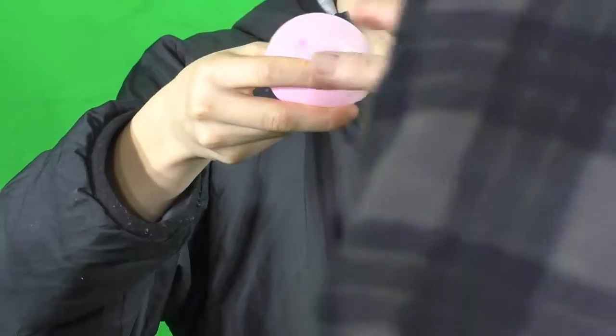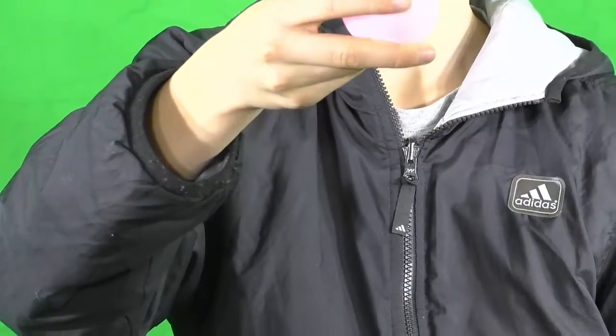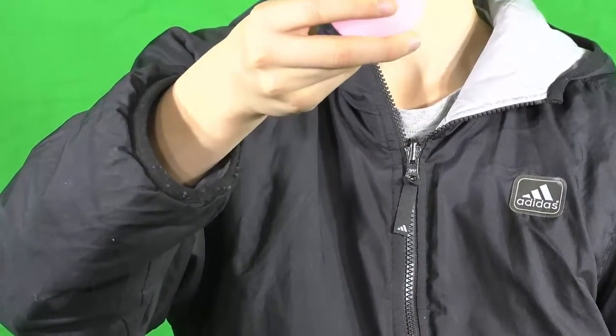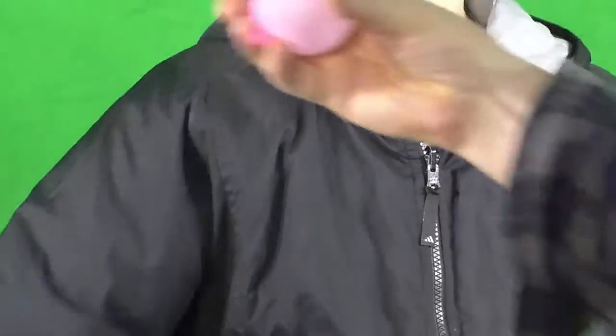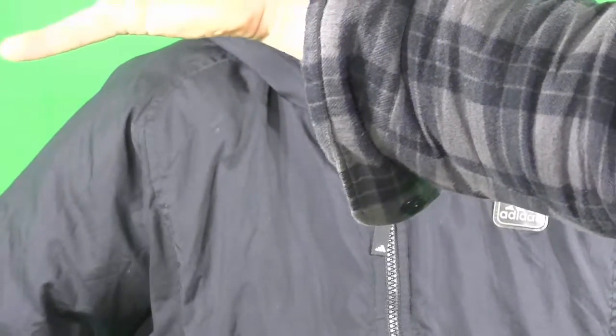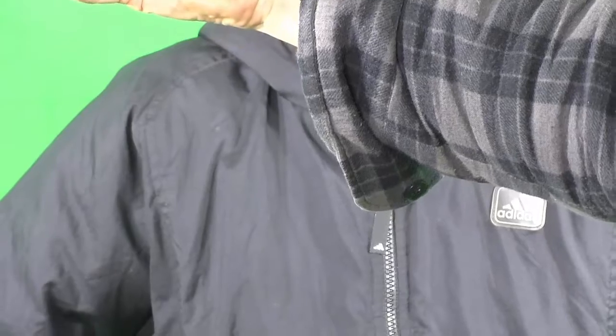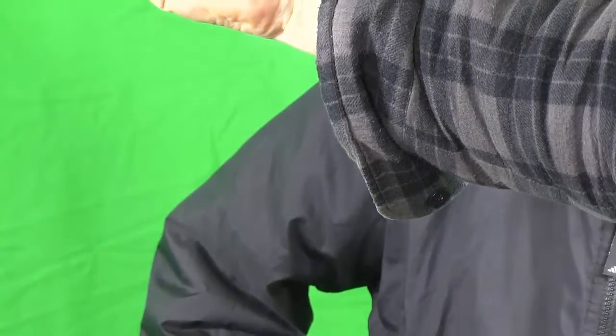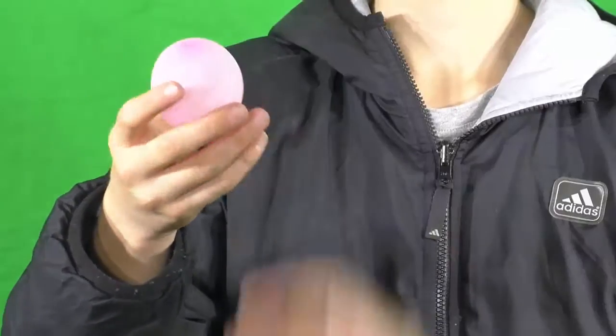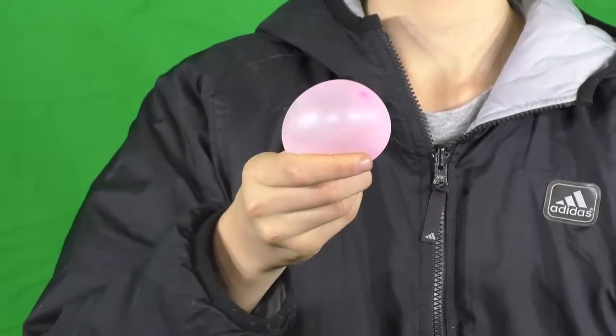The things in the world around us are either solids liquids or gases. It's easy to tell the difference just by looking at them. Solids like ice have a fixed volume and shape which means that they're rigid and can't be squeezed into a smaller space. They're incompressible.